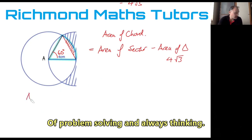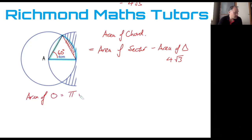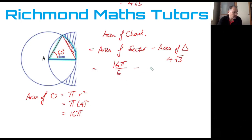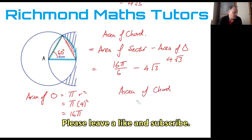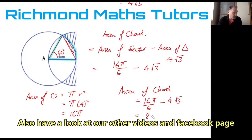The area of the circle equals pi r squared. The radius is four, which means the area of the circle is 16 pi. Which means the area of the sector is 16 pi divided by six. And we subtract the area of the triangle, which is four root three. So the area of the chord equals 16 pi over six minus four root three, which simplifies to 8 pi over three minus four root three.